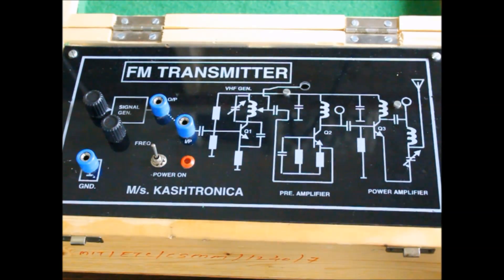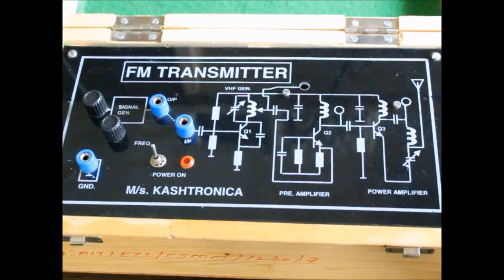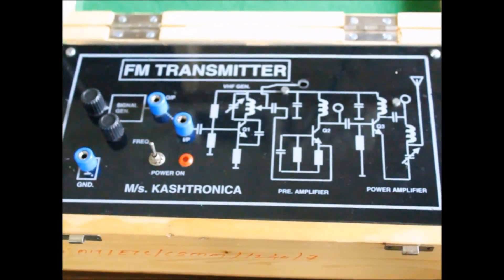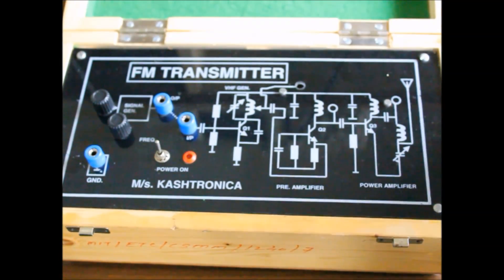Hello guys, so this is the experiment of FM transmitter which is quite simple. Basically in this experiment we have to generate our own FM, transmit it to this transmitter here and then detect it on a receiver, precisely a radio.